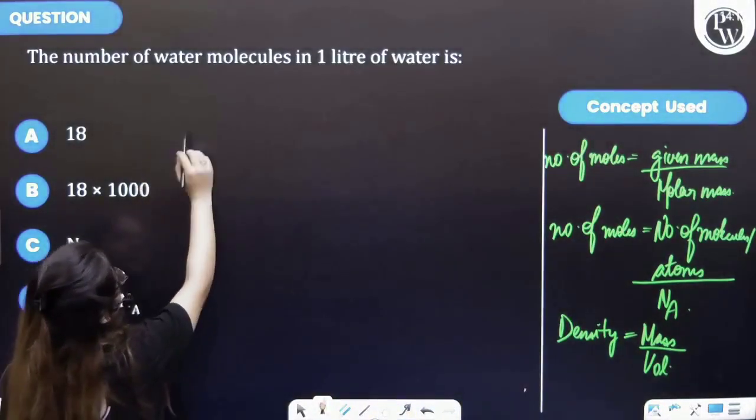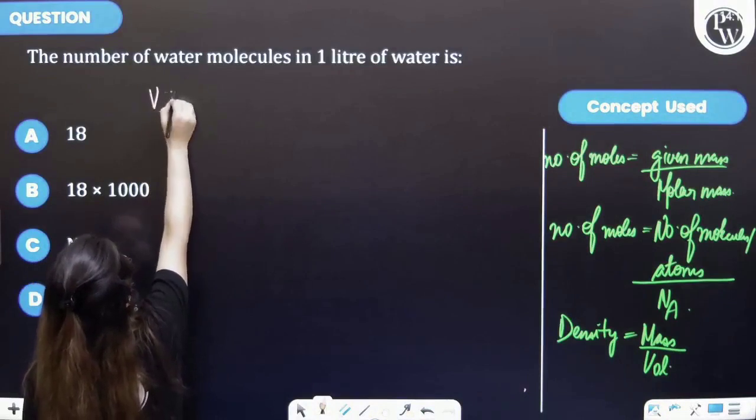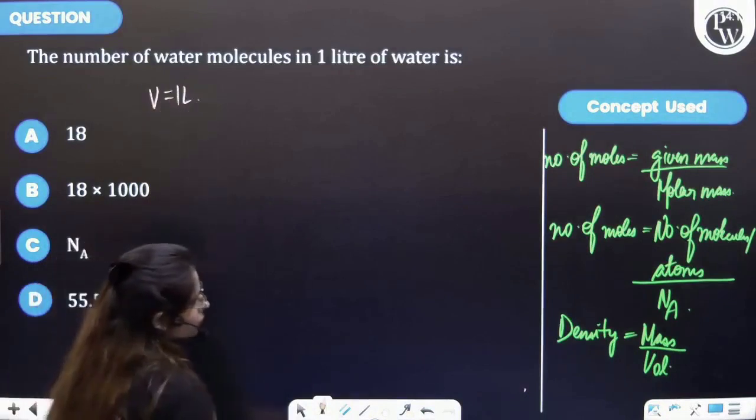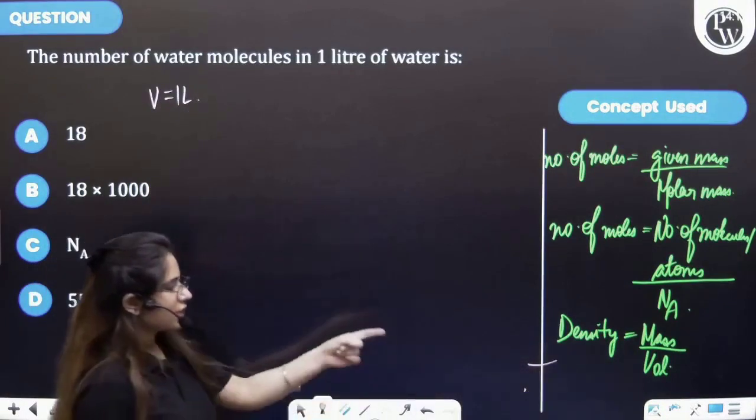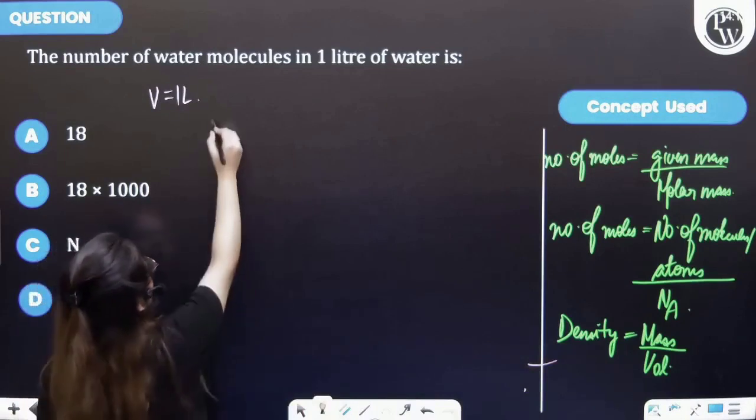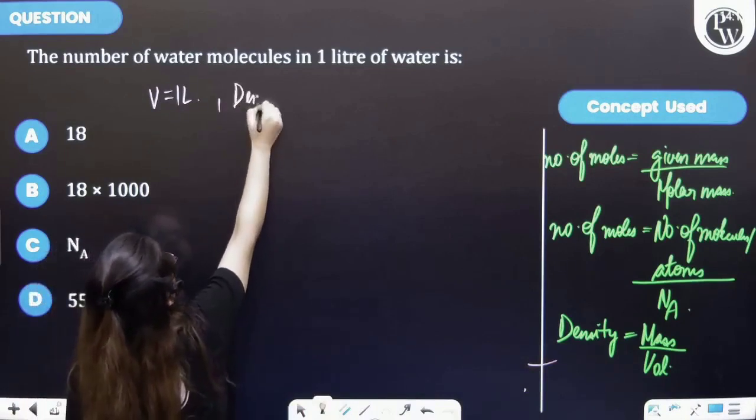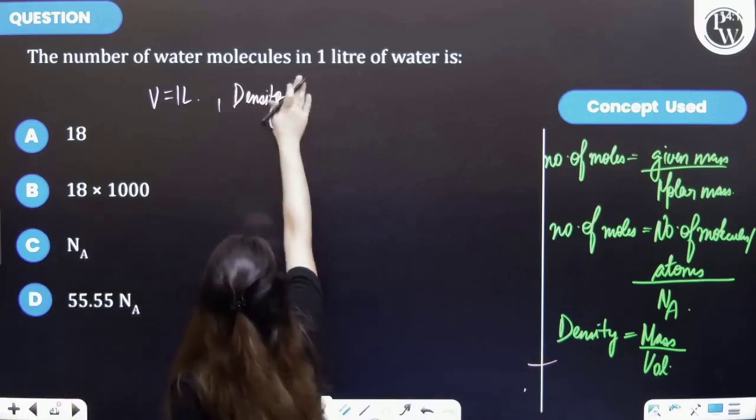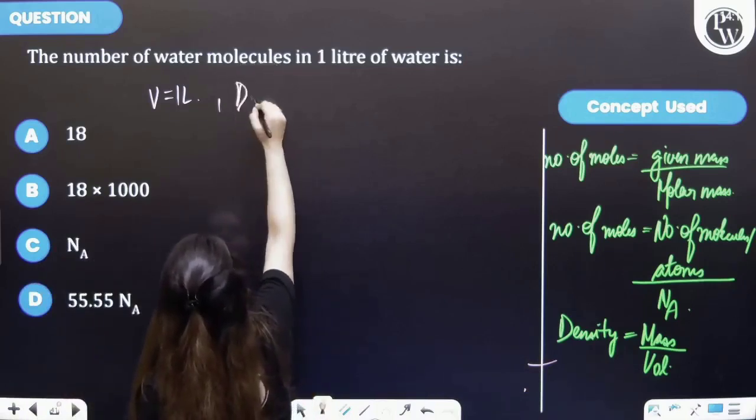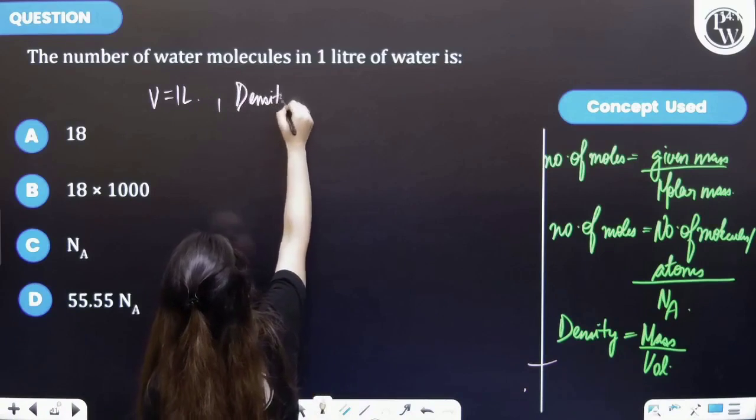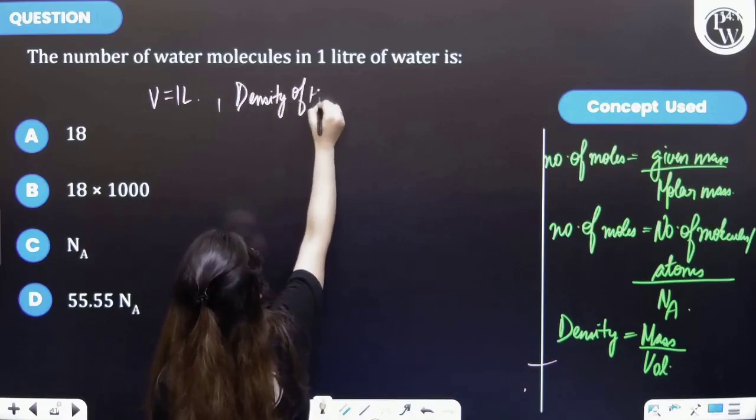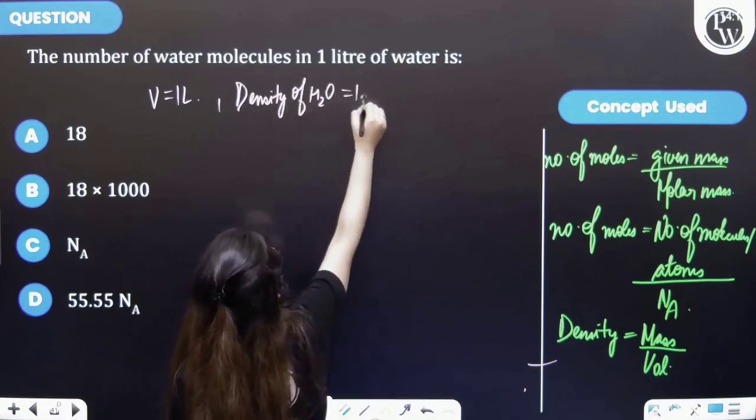So in the question it is given that 1 liter is volume. Let's use this formula first of all. Density is equal to mass by volume. We know that density of water is 1 gram per ml.